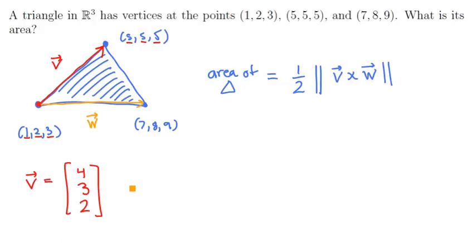We can do the same thing for W. So W is the vector who goes from (1, 2, 3) to (7, 8, 9). The change from 1 to 7 is an increase of 6 in the x component. The change from 2 to 8 is an increase in 6 as well. And the change from 3 to 9, also an increase in 6. So the two vectors we have are (4, 3, 2) and (6, 6, 6).